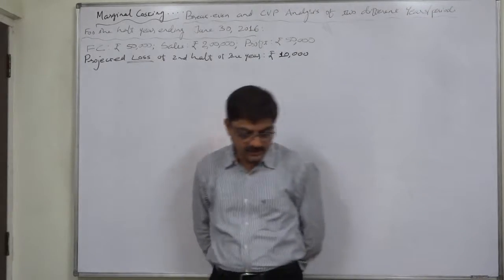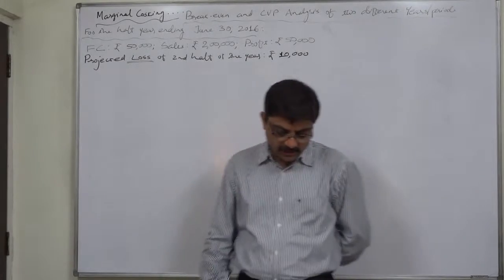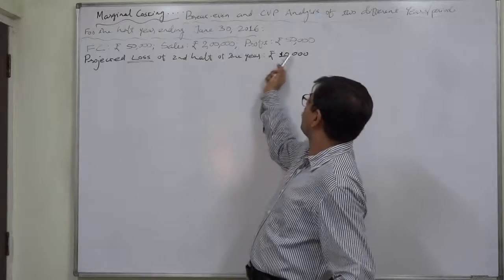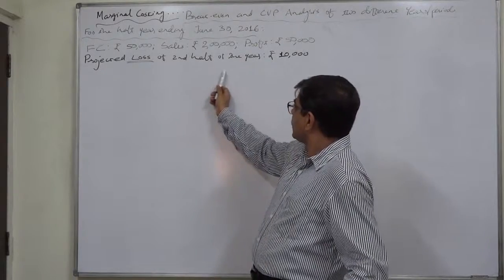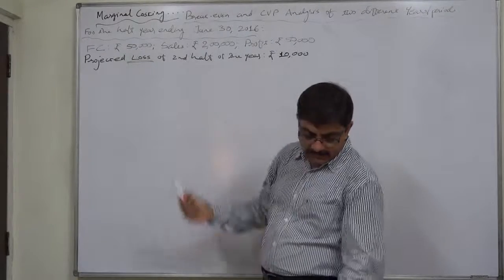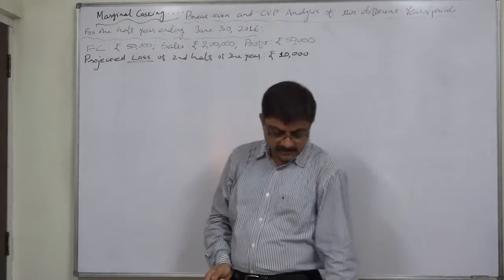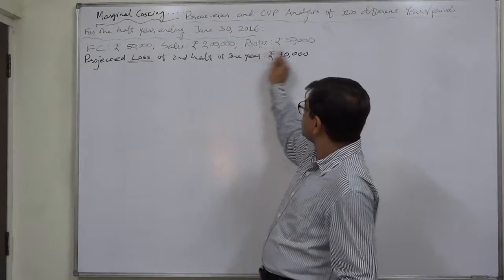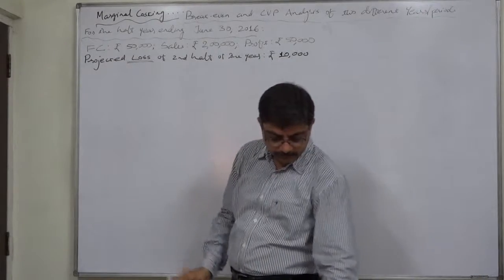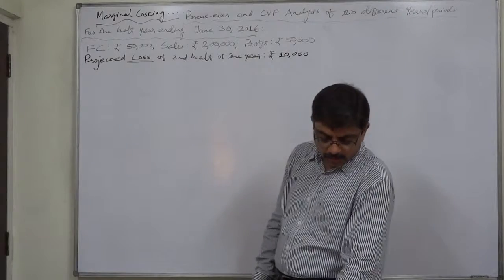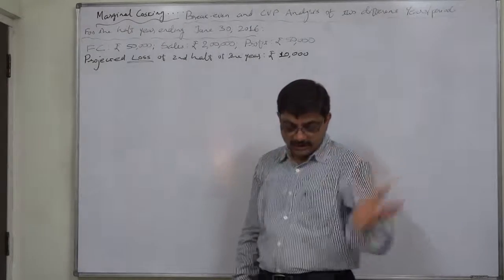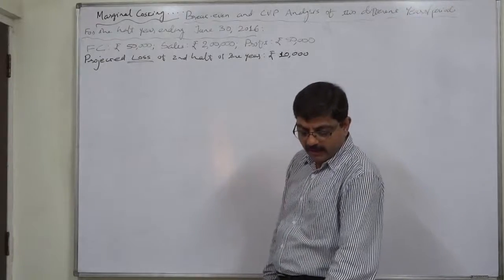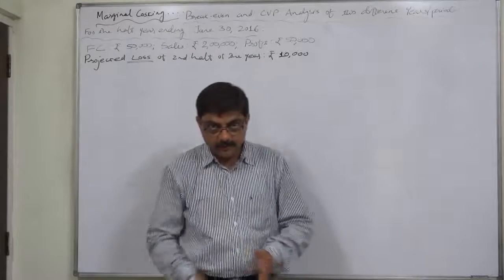Now let us take the first case. Ex Limited furnishes the following information relating to the half year ending 30th June 2016: Fixed cost Rs. 50,000; Sales Rs. 2 lakh; Profit Rs. 50,000. The projected loss for the second half of 2016 is Rs. 10,000. Calculate: (1) PV ratio, break-even point, and margin of safety for the first half of 2016; (2) expected sales of the second half of 2016, assuming no change in selling price, variable cost, or fixed cost; and (3) break-even point and margin of safety for the whole year.